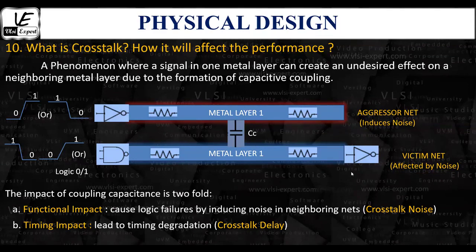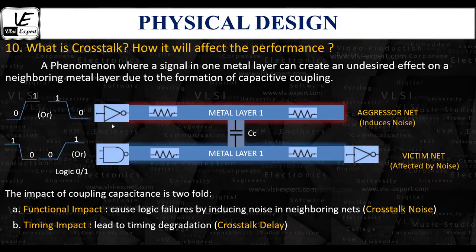The impact of crosstalk due to the formation of cross-coupling capacitance is twofold: functional impact and timing impact. With respect to the functional impact, crosstalk can cause logical failures by inducing noise in the neighboring metal layers. For instance, if one net is switching from one to zero or from zero to one, and the other net is at a constant logic value, the switching signal may cause voltage spikes on the static signal, and these spikes are called noise.